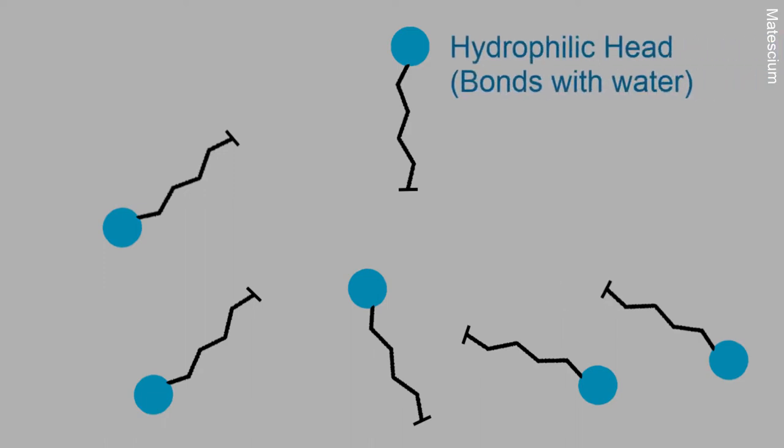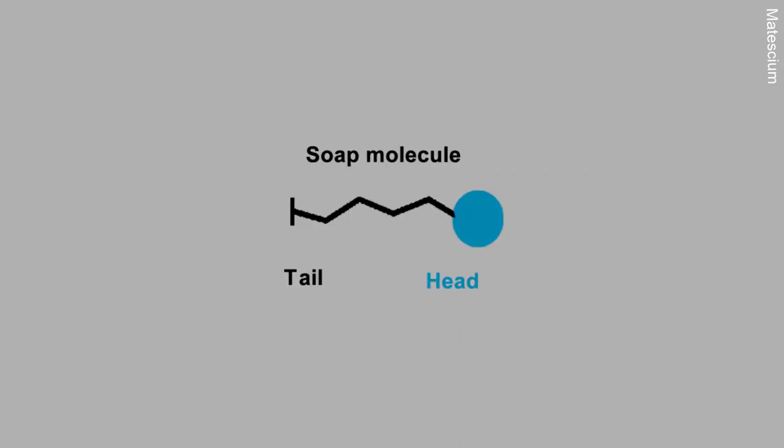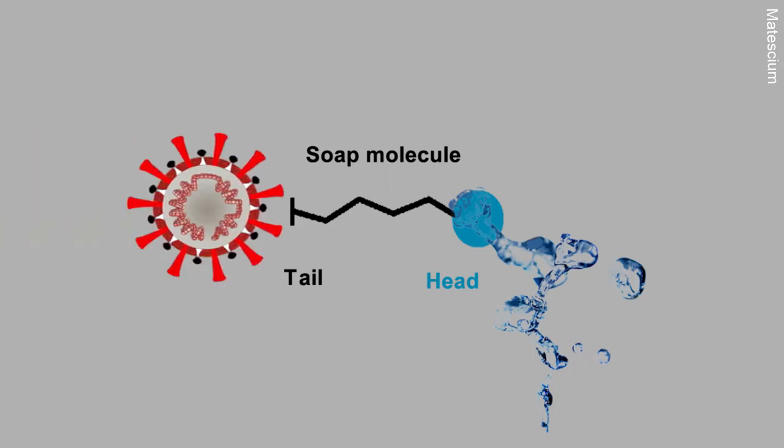The head is hydrophilic and the tail is hydrophobic. This hydrophilic head makes relatively strong bonding with water molecules, and the hydrophobic tail prefers to link up with oils and fats.